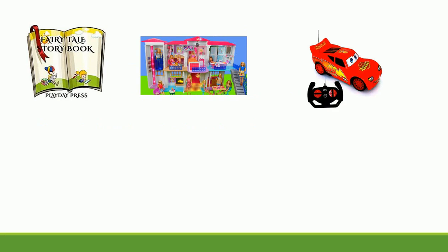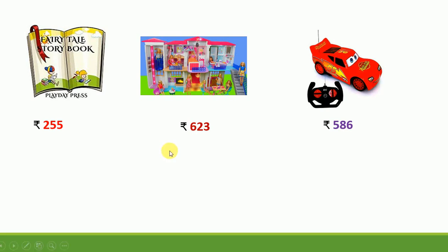Now let us learn more about the topic. Can you see there are 3 things given for you? The first one is storybook, the second one is barbie doll set, and the third one is remote control car. Down below, the cost of each item is given. The cost of the storybook is Rs. 255, cost of barbie doll set is Rs. 623, and the cost of the remote car is Rs. 586.